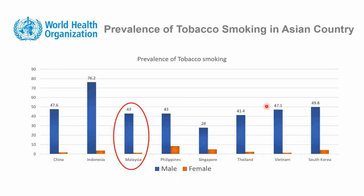This graph shows the prevalence of tobacco smoking in Asian countries. Indonesians have a very high prevalence of tobacco smoking among males, with 76.2 percent of male populations being smokers. In Malaysia, we are also doing quite badly in terms of prevalence of tobacco smoking, whereby 43 percent of the male population are smokers. This is a major issue in Malaysia, whereby smoking cessation services or clinics are not well established, and this is important in prevention of lung cancer.